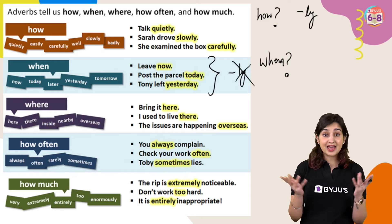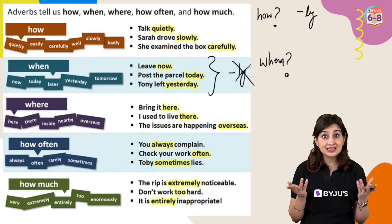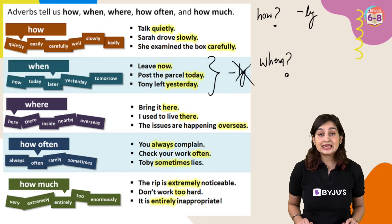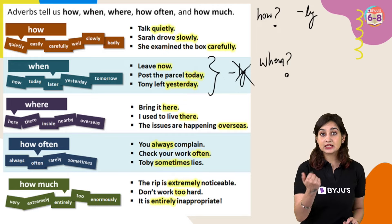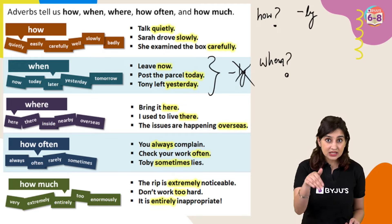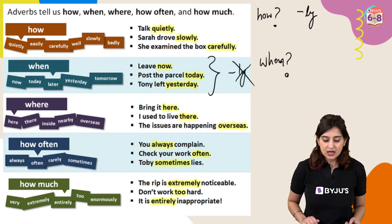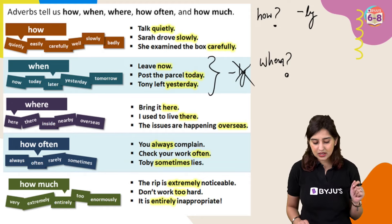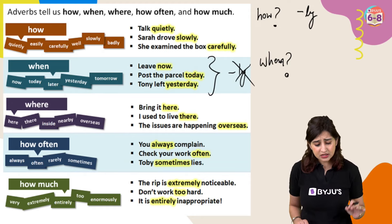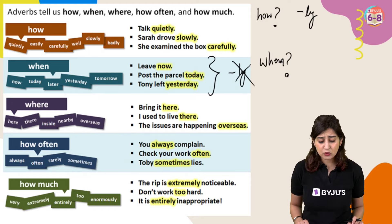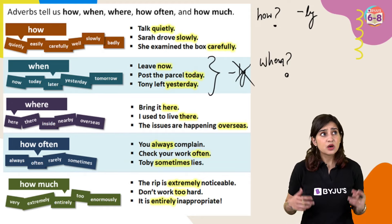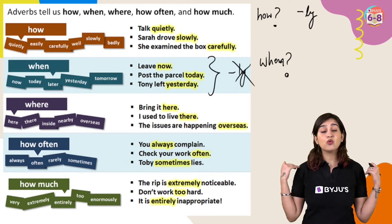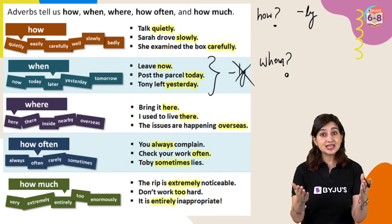Now let's move on to 'where' — place adverbs. 'Bring it here' — where? Here. 'I used to live there' — where? There. 'The issues are happening overseas' — where are the issues happening? Overseas.